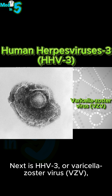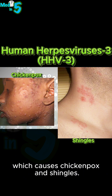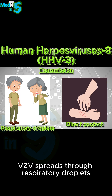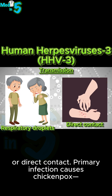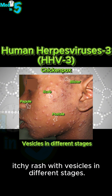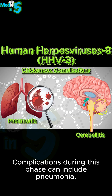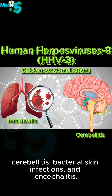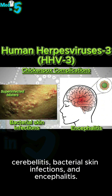Next is HHV-3, or varicella zoster virus, which causes chickenpox and shingles. VZV spreads through respiratory droplets or direct contact. Primary infection causes chickenpox, a widespread itchy rash with vesicles in different stages. Complications during this phase can include pneumonia, cerebellitis, bacterial skin infections, and encephalitis.